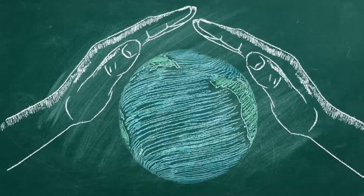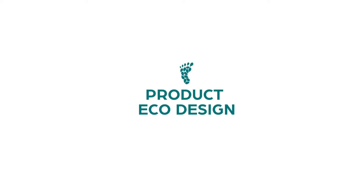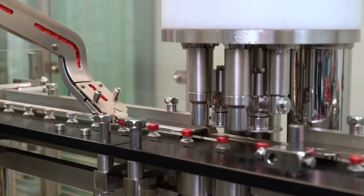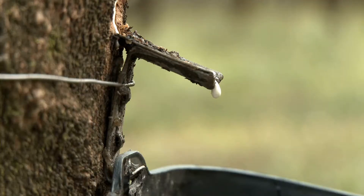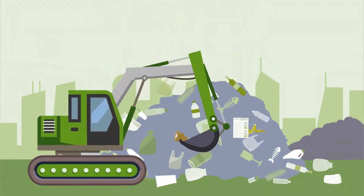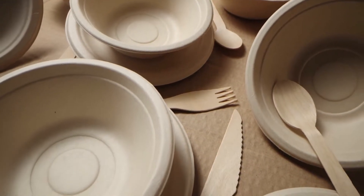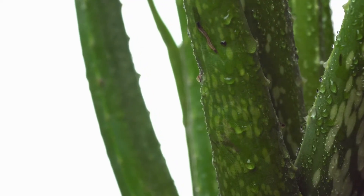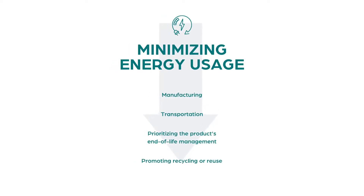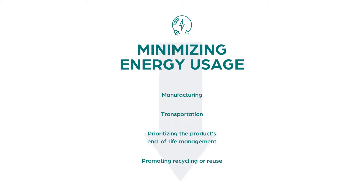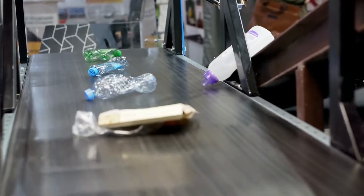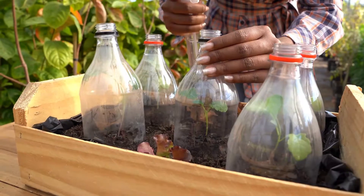An essential consideration in eco design is the concept of product eco design. It involves designing products in a way that considers the entire life cycle, from raw material extraction to disposal. This approach ensures that the product has minimal environmental impact throughout its entire lifespan. Designers strive to use materials that are renewable, biodegradable, or recyclable, reducing the consumption of finite resources. They also aim to minimize energy usage in manufacturing and transportation, and prioritize end-of-life management by promoting recycling or reuse.